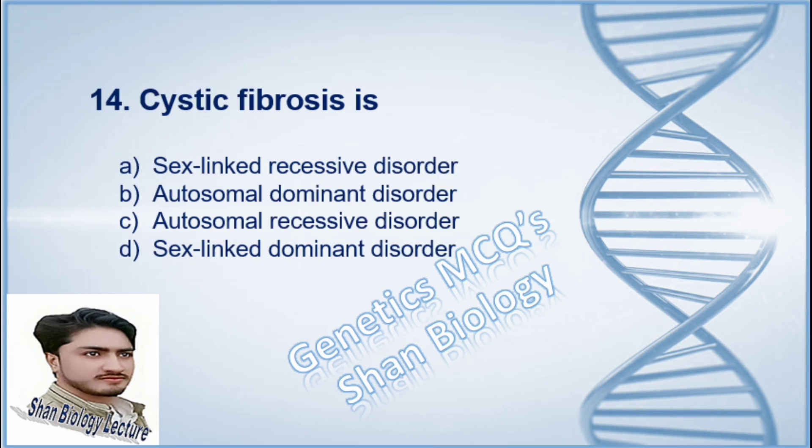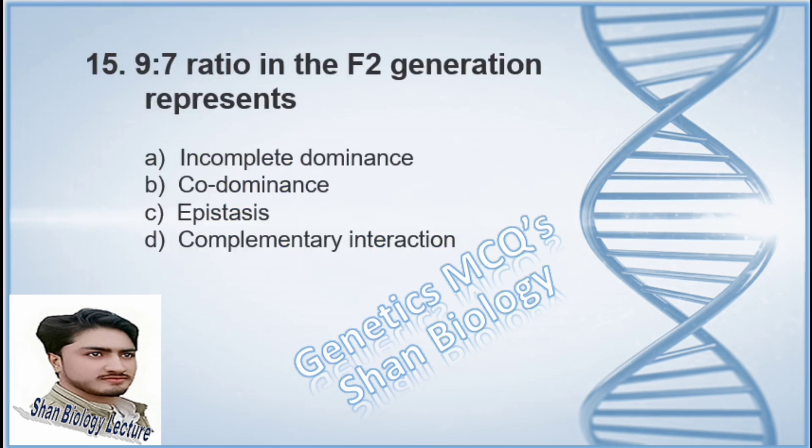The correct option is C, epistasis. Question 14: Cystic fibrosis is — option A sex-linked recessive disorder, option B autosomal dominant disorder, option C autosomal recessive disorder, option D sex-linked dominant disorder. The correct option is C, autosomal recessive disorder.